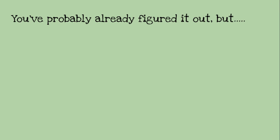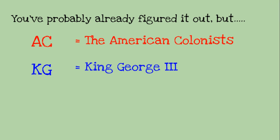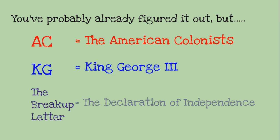So you've probably already figured this out, but just in case you didn't: A.C. were the American colonists, K.G. was King George III, and the breakup letter was the Declaration of Independence. So if you figured all three of those things out, give yourself a pat on the back. If you didn't, no big deal — now you know.